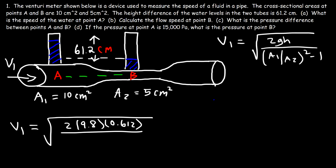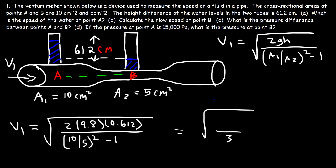The areas can be in square centimeters since A1/A2 is unitless — the units cancel, they simply must match. A1 is 10 square centimeters, A2 is 5, so 10/5 = 2, 2 squared is 4, and 4 minus 1 is 3. Then 2 × 9.8 × 0.612 = 11.9952, basically about 12. Dividing by 3 and taking the square root, V1 is approximately 2 meters per second. That is the speed of the water flowing through point A.